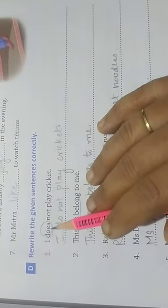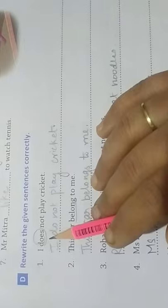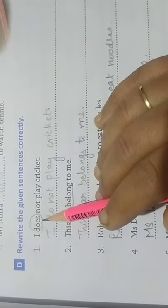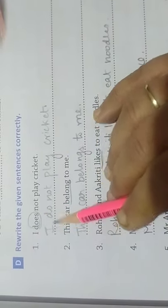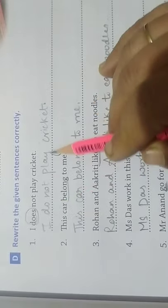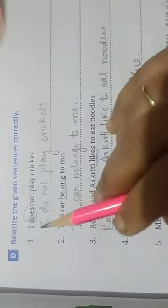Number one: The incorrect sentence is 'I does not play cricket.' The correct sentence is: I do not play cricket.